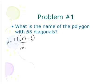All of them are important. So it has 65 diagonals. What I can do here is I can take 65 and set it equal to n times n minus 3 over 2.